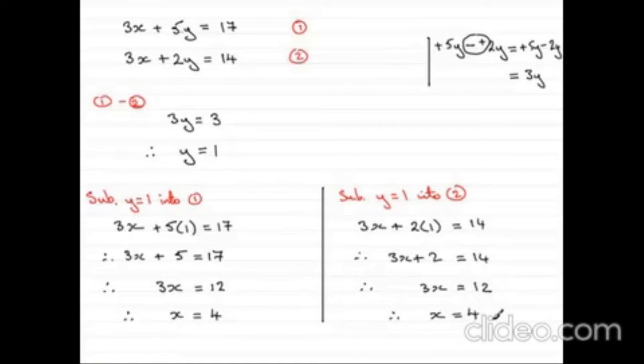And when we subtract 2 from 14, we get 3x equals 12. Let's divide both sides by 3. We have x equals 4.